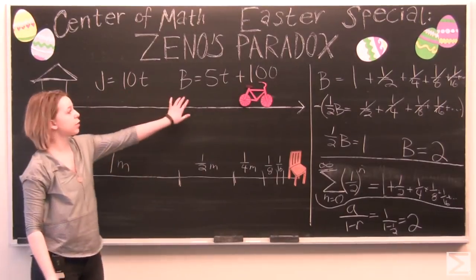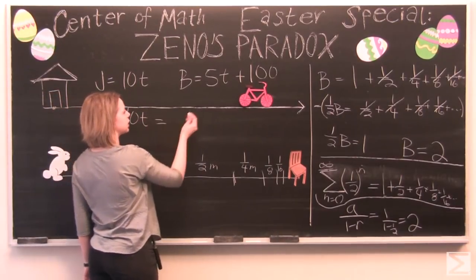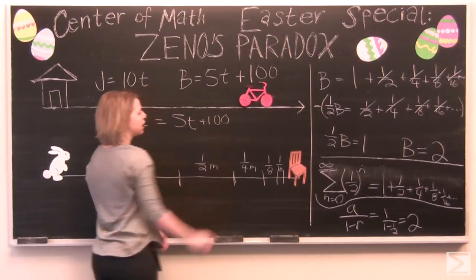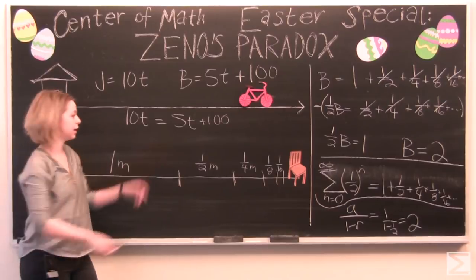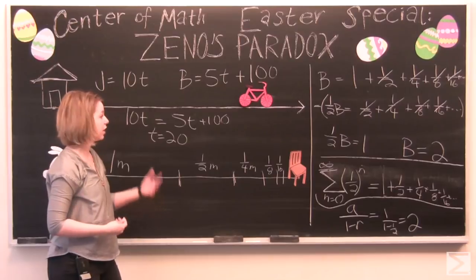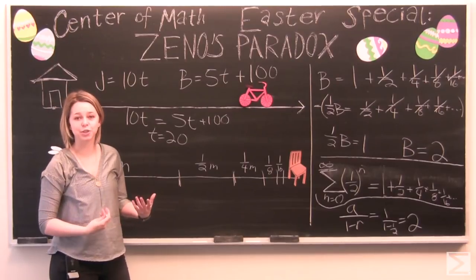Then we can set these equations equal to each other. 10T equals 5T plus 100. And solve for T. And that time will be 20 seconds. And that is when John will catch up to the Easter Bunny in the original paradox.